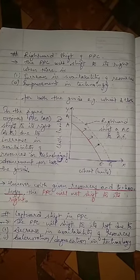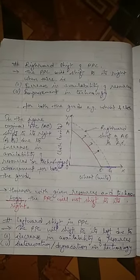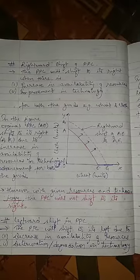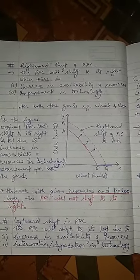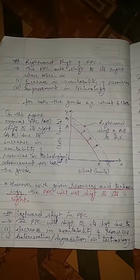First is the rightward shift of PPC. The PPC will shift to the right when there is an increase in availability of resources or improvement in technology for both goods. In the figure, PPC AE — the original PPC — shifts to the right to A1E1 due to increase in availability of resources or technological advancement for both goods. With given fixed resources, PPC will not shift to its right; it can only shift right when there is an increase in resources or improvement in technology.